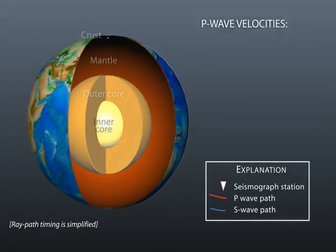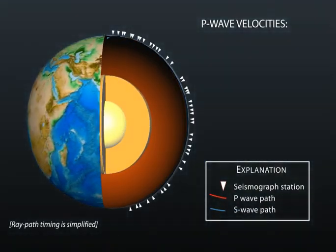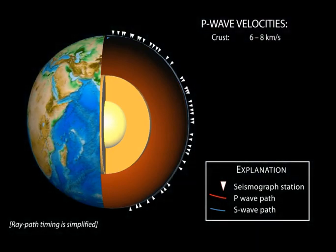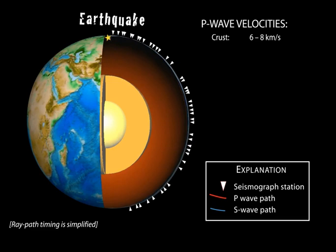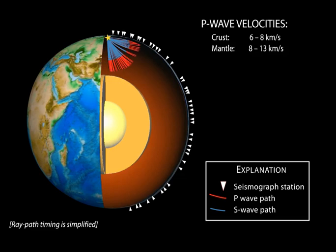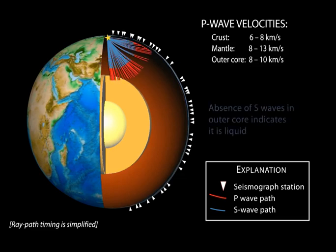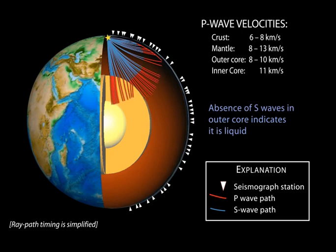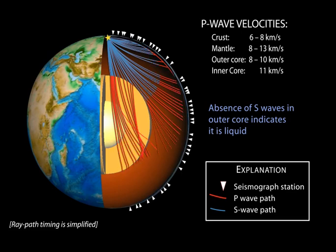How did scientists figure out where these layers were? They used the arrival times of seismic waves to worldwide seismic stations. Seismic waves leave the hypocenter of an earthquake and travel in all directions. If the Earth had no change with depth, seismic waves would travel straight paths, but the Earth has composition, density, and temperature changes that cause the seismic rays to reflect and refract along boundaries, as velocity in the mantle generally increases with depth.